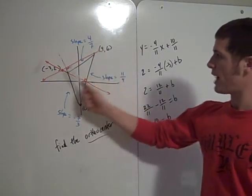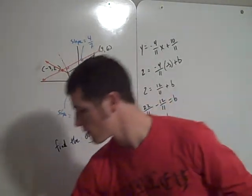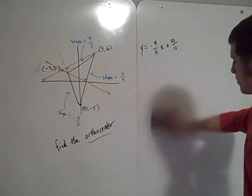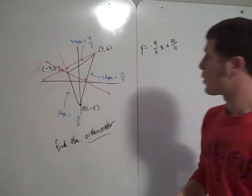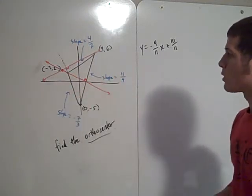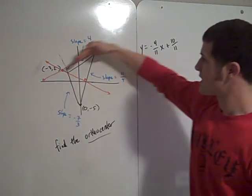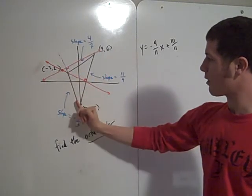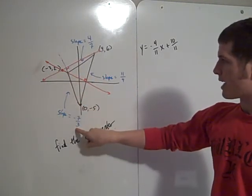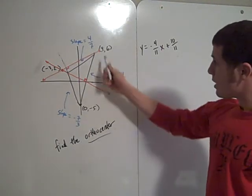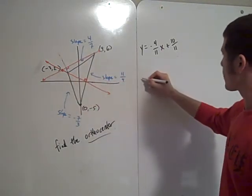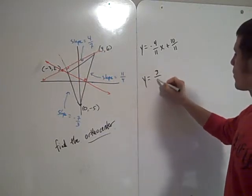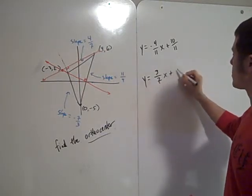Now let's find the equation of that line. The equation of this altitude, well what's the slope got to be? The slope of this line has to be the opposite reciprocal of the slope of this side of the triangle. So it's got to be positive 3 sevenths.